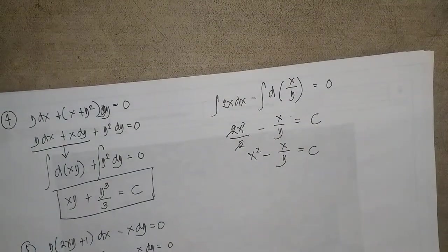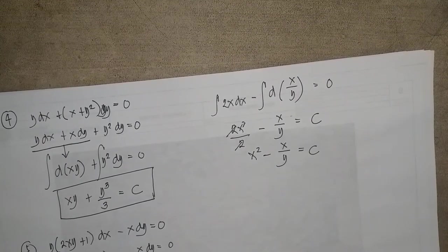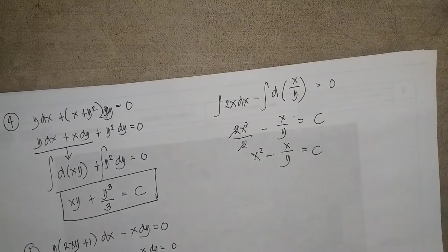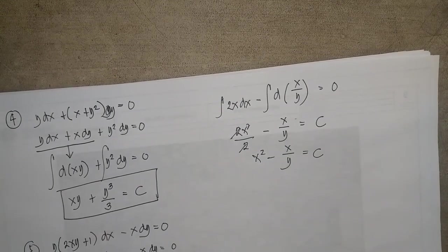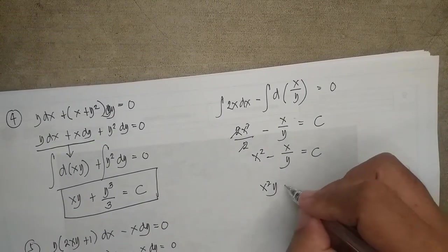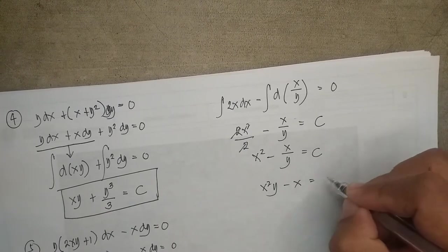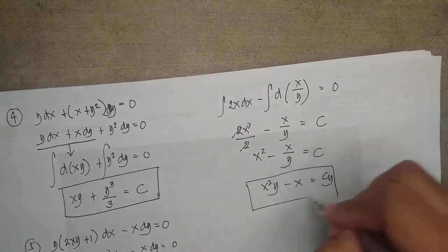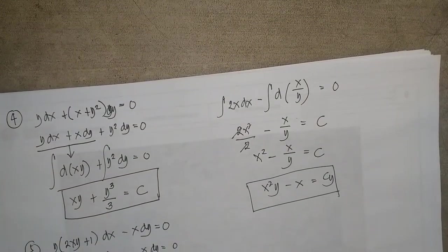So example number five's solution is x² minus x/y = 0, or equivalently x²y minus x = cy. This answers example number five.